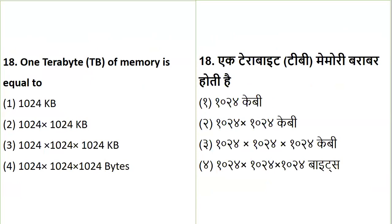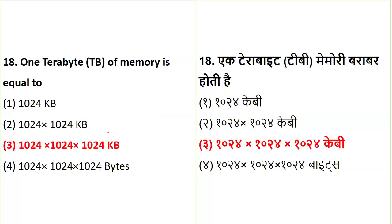As mentioned, memory questions definitely appear — we covered memory in detail in the live class. The question is: one terabyte of memory is equal to what? The answer is 1024 × 1024 × 1024 kilobytes equals one terabyte. You should also be aware of larger memory units like zettabyte, petabyte, and yottabyte, since nowadays questions rarely focus only on kilobytes, gigabytes, or megabytes.